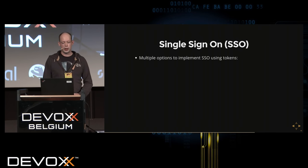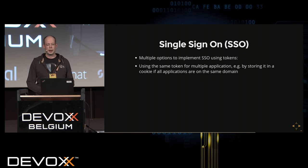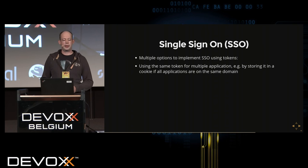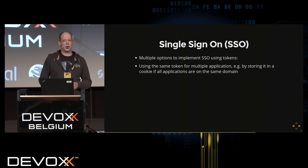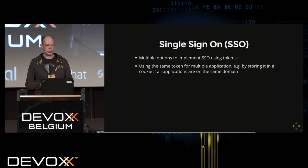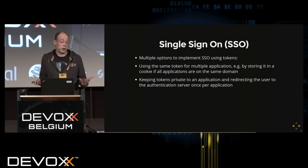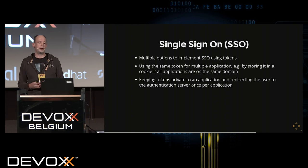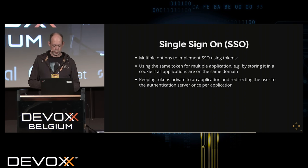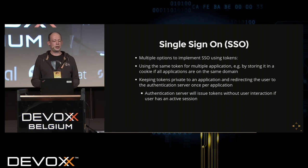For single sign-on you can use the same token stored in a cookie or HTML5 local storage. This makes sense if applications are closely related — operated by the same organization in the same security zone. Alternatively, you can issue separate tokens per application so that a token is scoped to one application and cannot be stolen and used to impersonate another. This means the authentication server is contacted when the user switches applications, but the user only notices a brief redirect with no interaction.